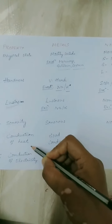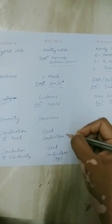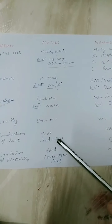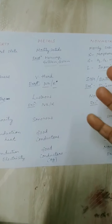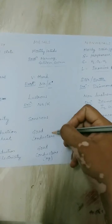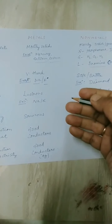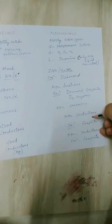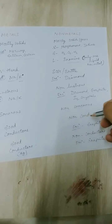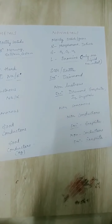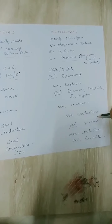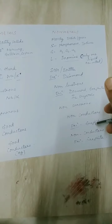Conduction of heat is the next property. All metals are very good conductors of heat and electricity — that is the reason why we use them for making cooking utensils, such as aluminium, copper, or steel vessels. Non-metals are non-conductors of heat — the handles of cooking vessels are usually made of non-conductors like bakelite, wood, or plastic. Exceptions are diamond and graphite, which are also good conductors of heat.